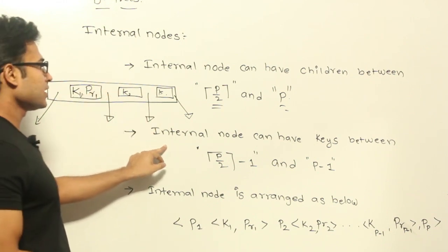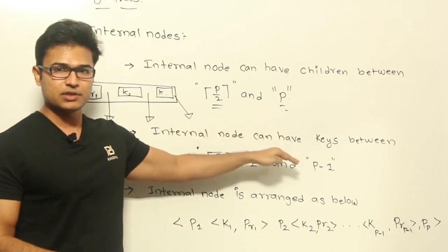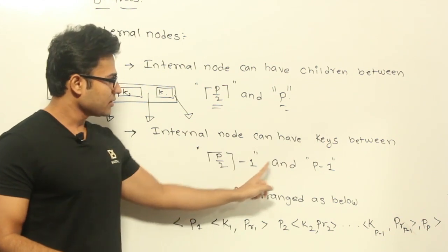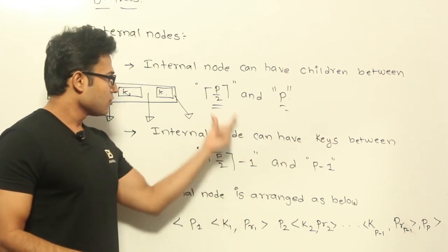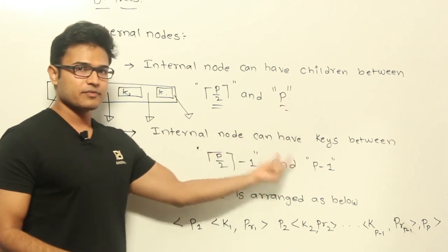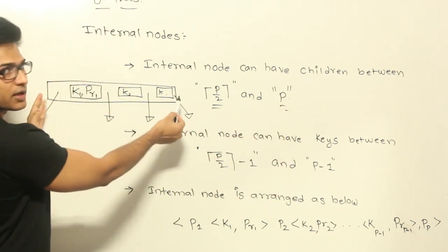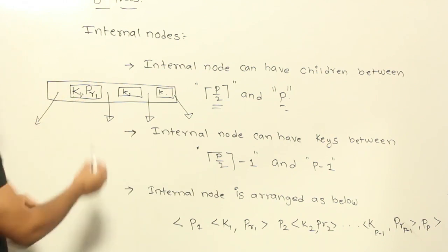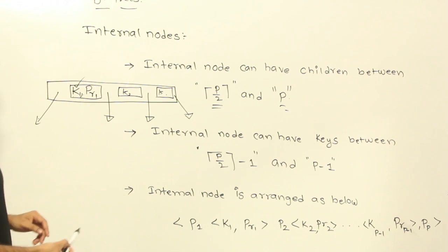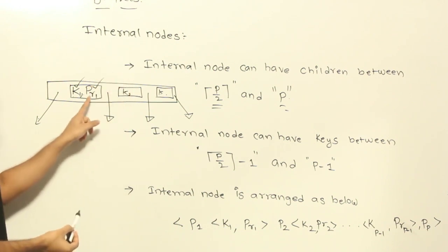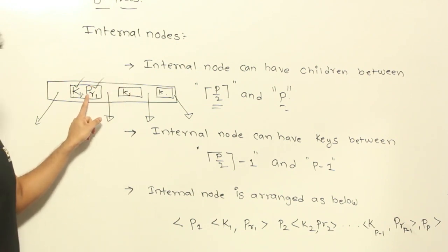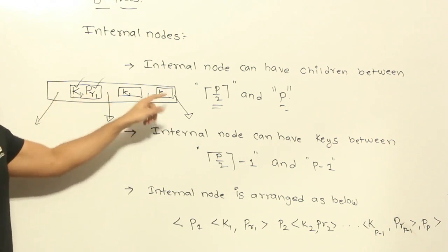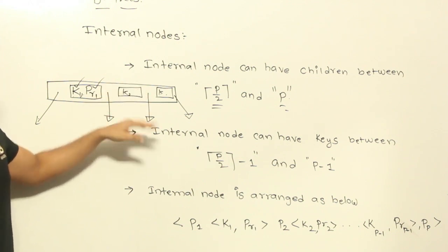At any point in time, that is why even the minimum and maximum numbers will also differ by 1. So the internal node can have keys between P/2 minus 1 and P minus 1. The reason we subtract 1 is that the children count is always going to be greater compared to key-value pairs. Now, what are these key-value pairs? This key is what you are searching for, and this pointer is pointing to either the data or the record containing this particular key. And the other pointers are pointing to the nodes of the tree.